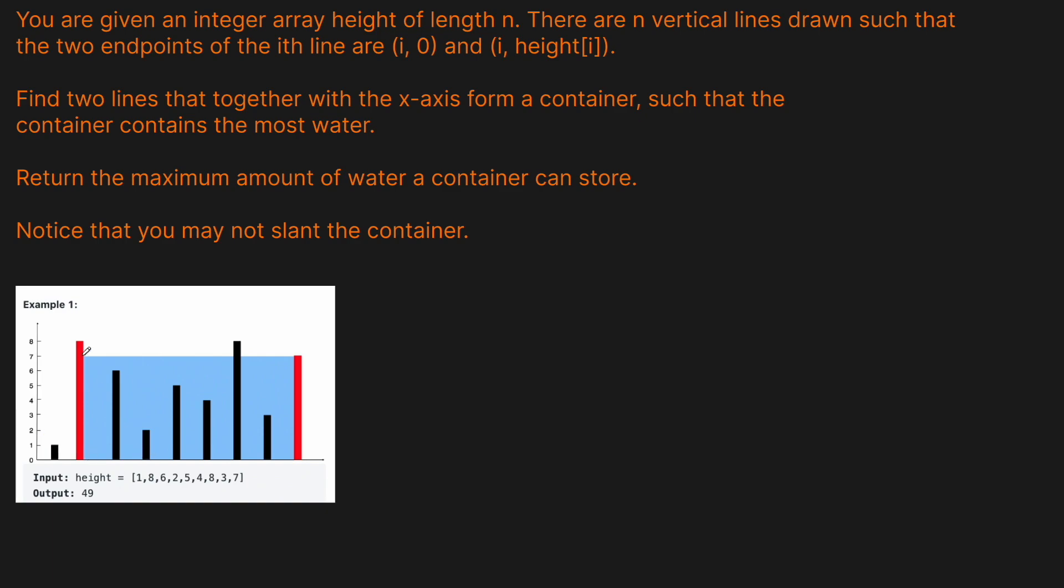So we basically want to find two bars such that the area is maximized. And basically the way that we're going to do this, one way we could do this is try all of the possible combinations. We could try the first bar with the second bar, the first bar with the third bar, the first bar with the fourth and so on and so forth.